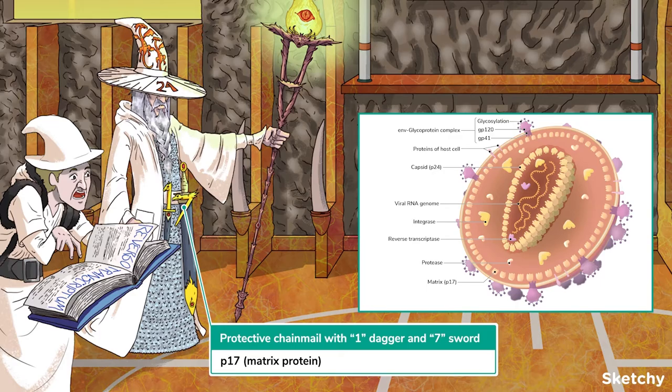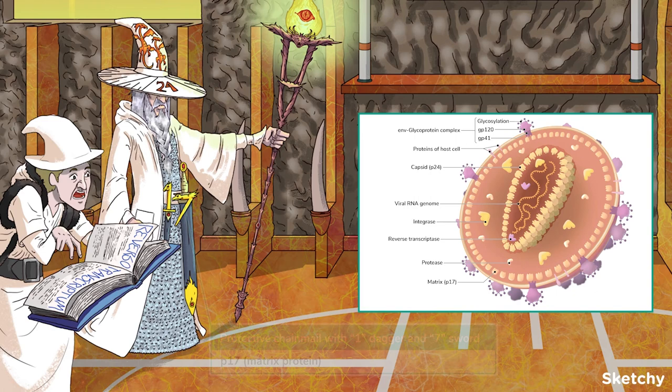The capsid is itself surrounded by another layer. Next comes an interwoven matrix that connects the core to the envelope. Here you'll find the P17 matrix protein. Our wizard has come prepared for battle, protected by a chainmail undercoat and a dagger and sword combo that form the number 17. Remember, the chainmail undercoat is to remind you that the P17 matrix proteins are found beneath the viral envelope.